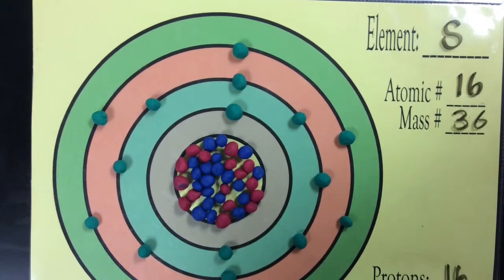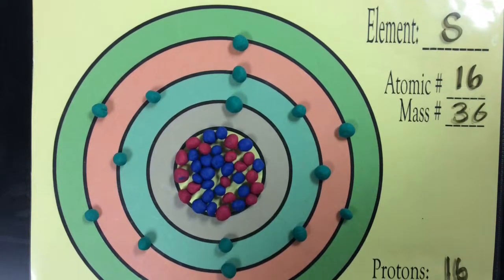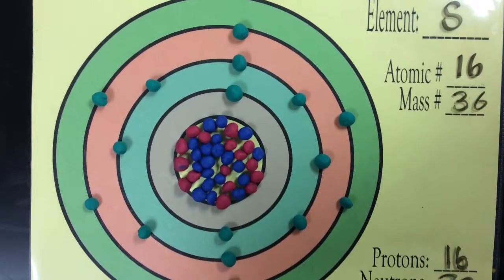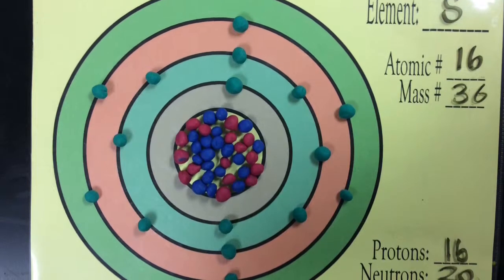Sulfur-36 has 20 neutrons as opposed to the normal 16, which makes it officially an isotope. It's stable, which means we don't have to worry about being near it.